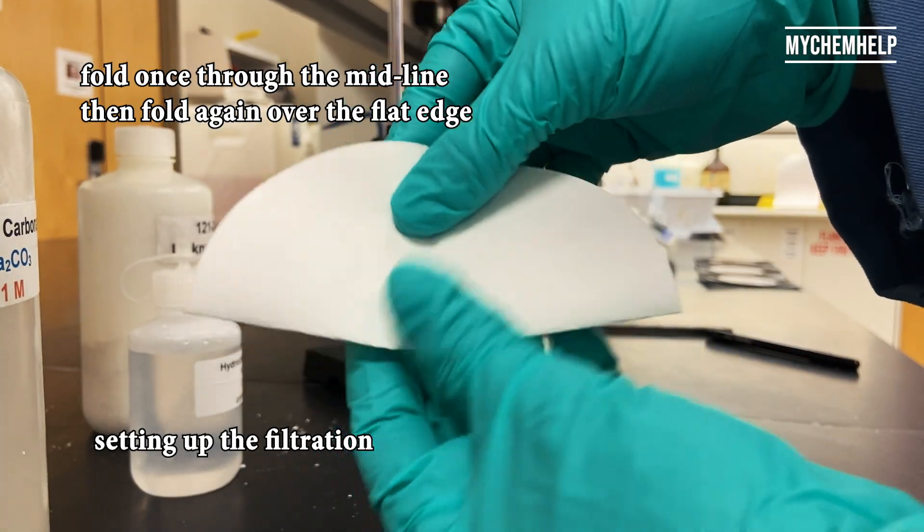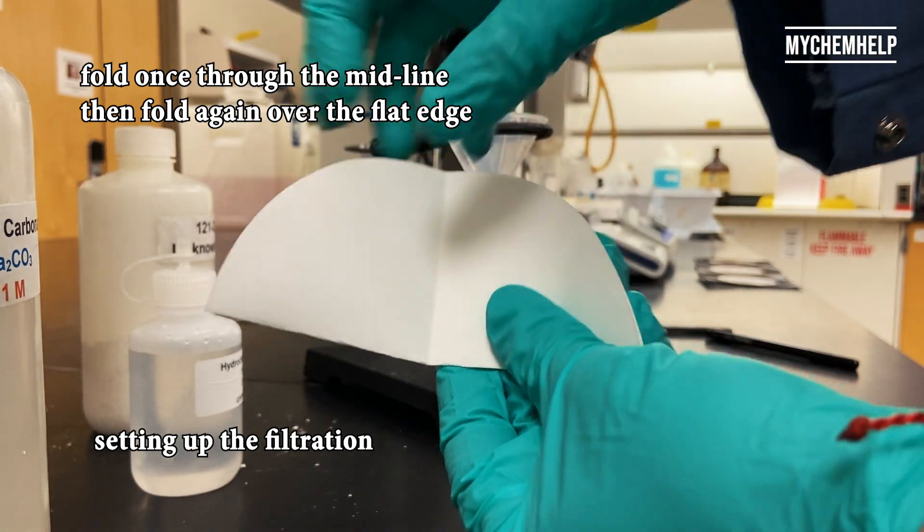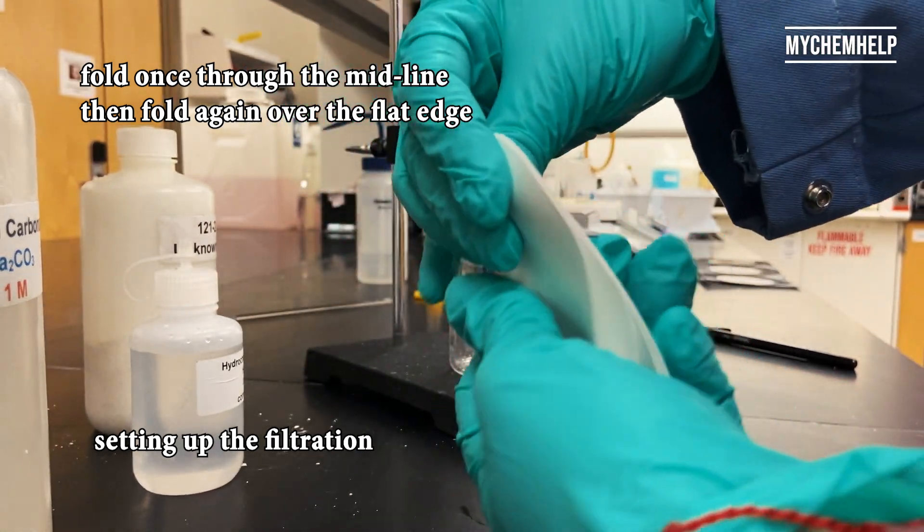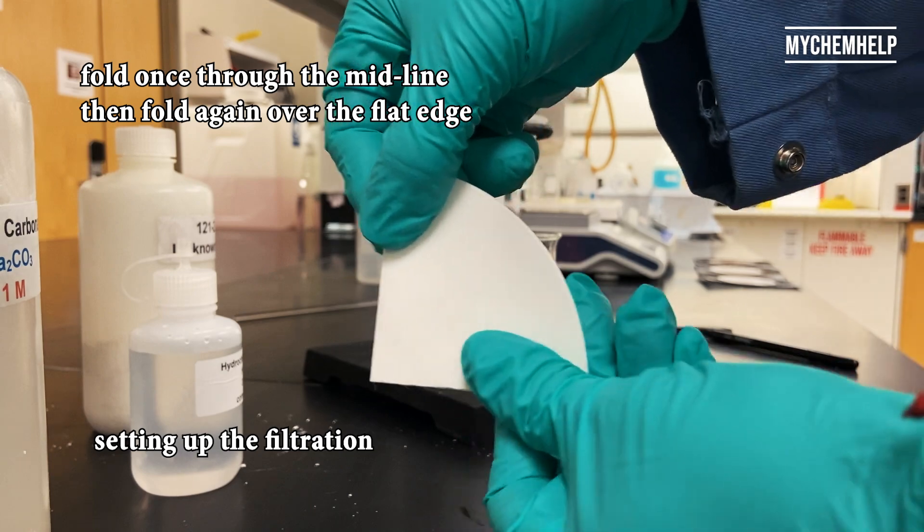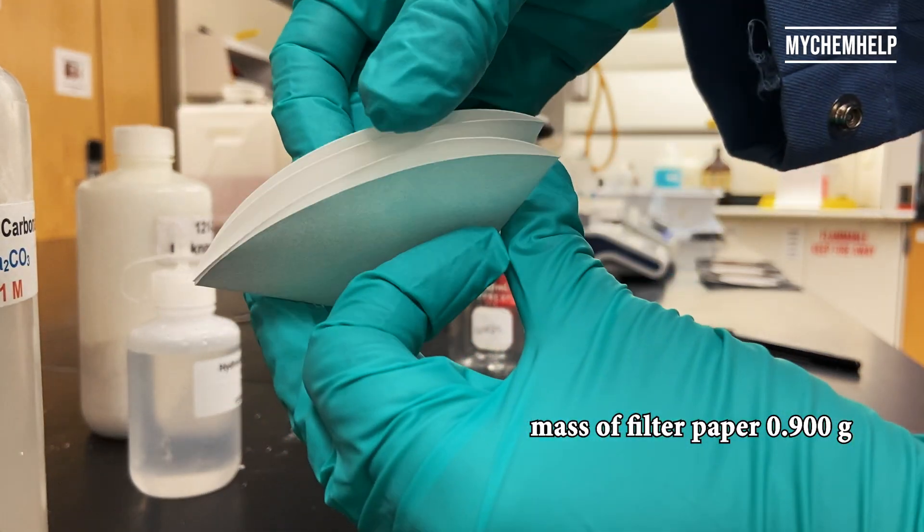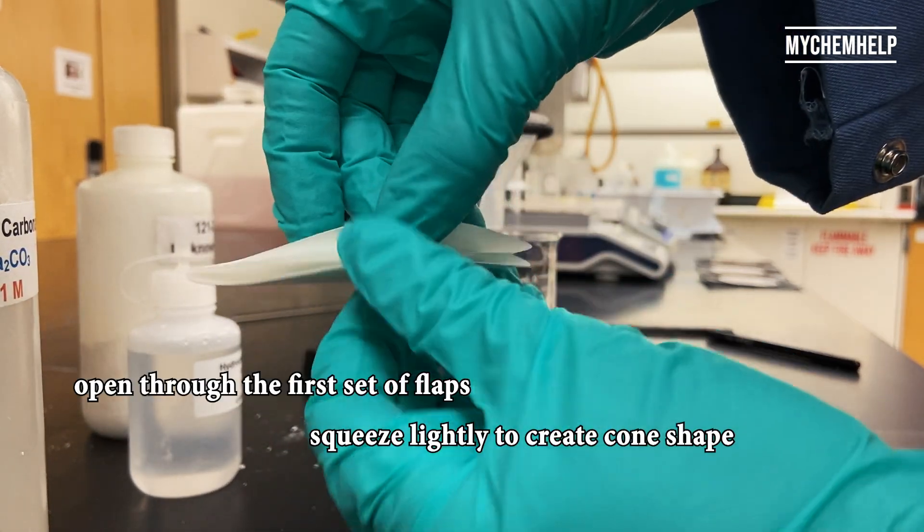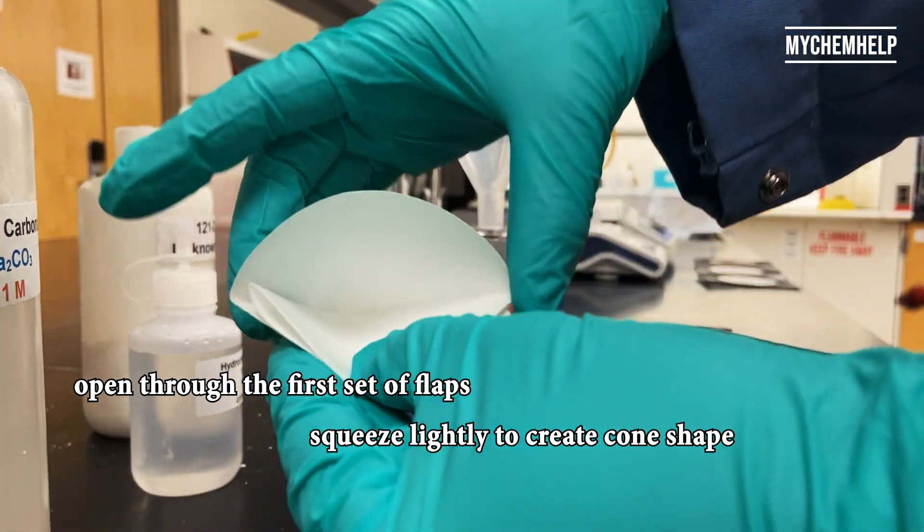So I'm setting up a filtration next, and I think the easiest way is just to fold the filter paper in quarters, and open through one of the first flaps, and just to create a little cone.